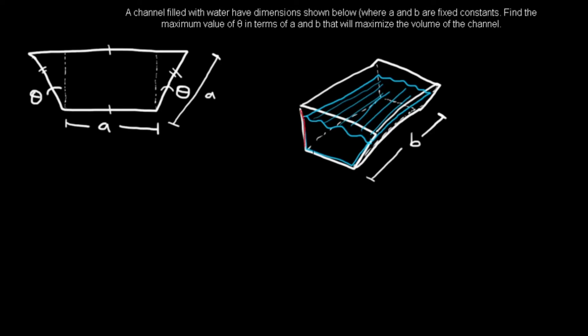The trapezoid face area, times the length B, gives the volume. We can break the trapezoid into two triangles and a rectangle. The cross-sectional area — let's call that A — and we also don't know what the height is, so let's write that as C.